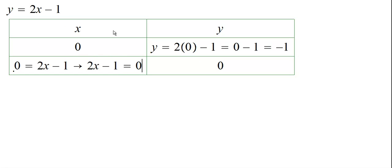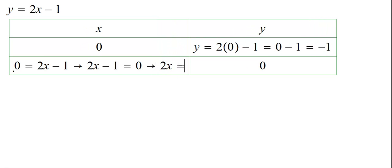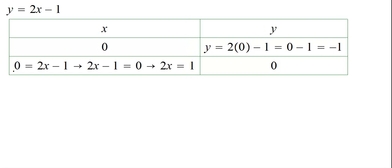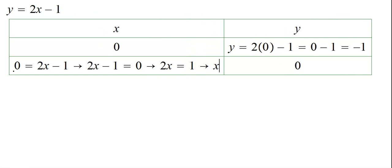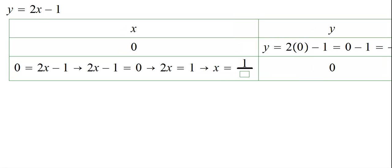Now we will solve for x, which gives me 2x equals, we move negative 1 over to this side, so we get 1, and then x becomes how much? 1 over 2.